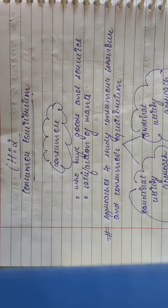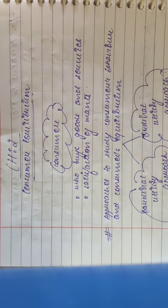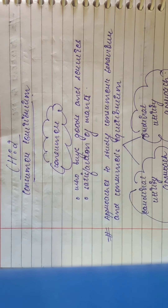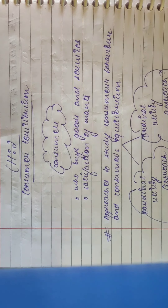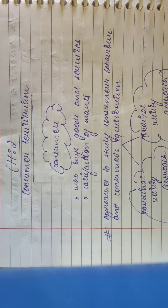Before heading towards the chapter, I would like to tell you what this chapter will cover. First is the cardinal utility approach, the concept of utility, law of diminishing marginal utility, consumer equilibrium, ordinal utility, budget line, and consumer equilibrium by indifference curve analysis.